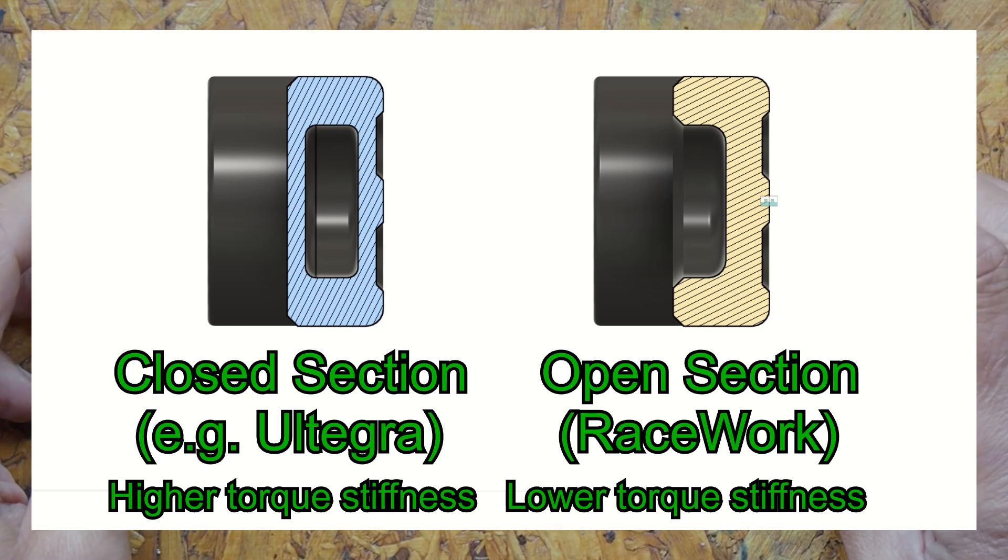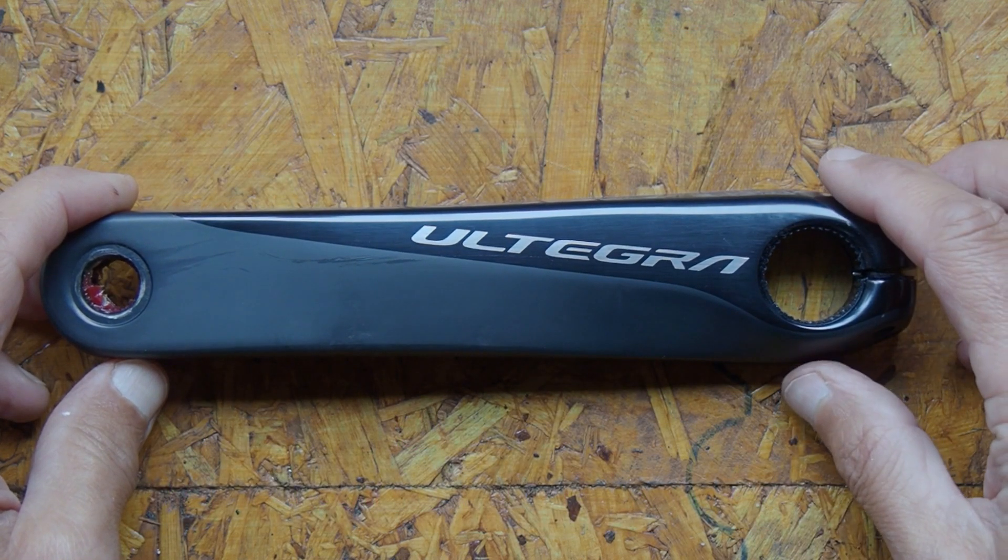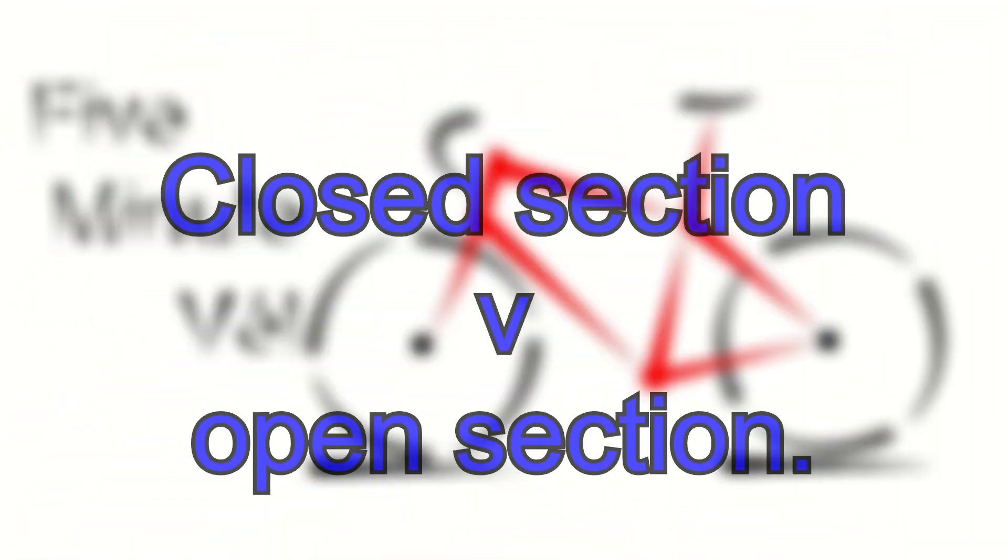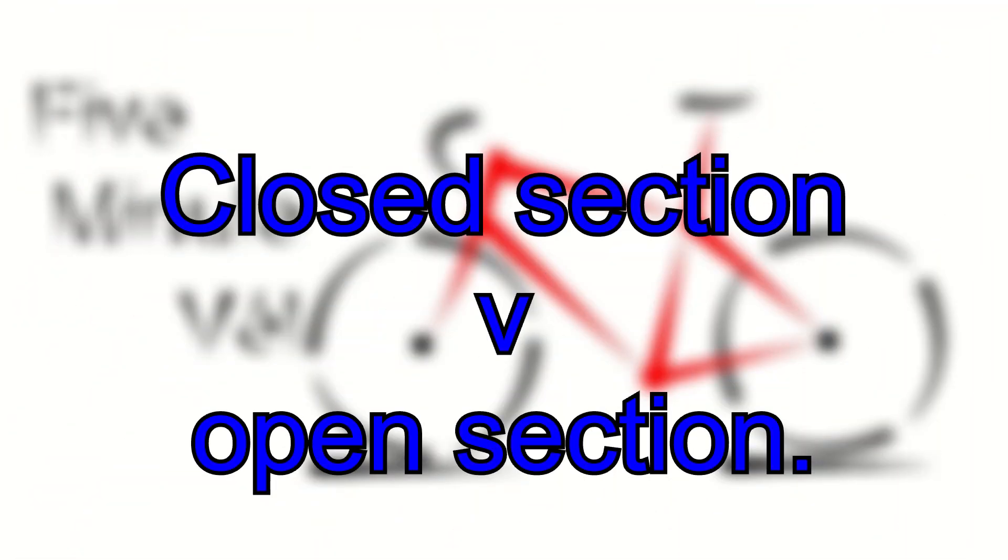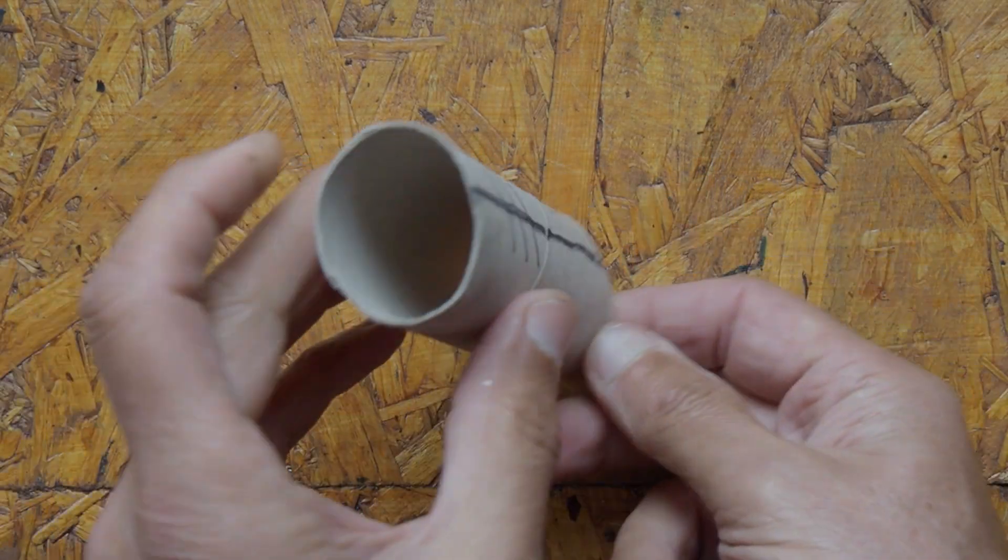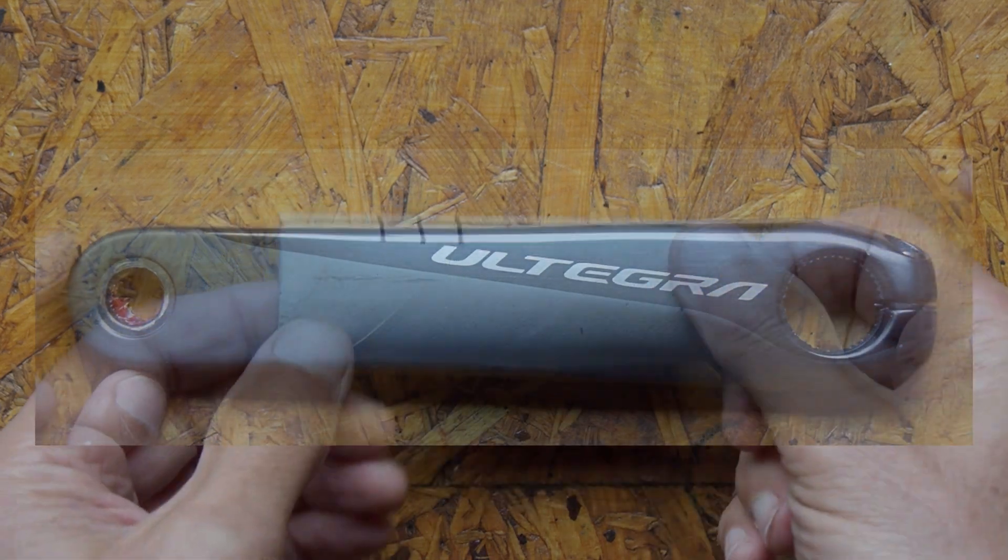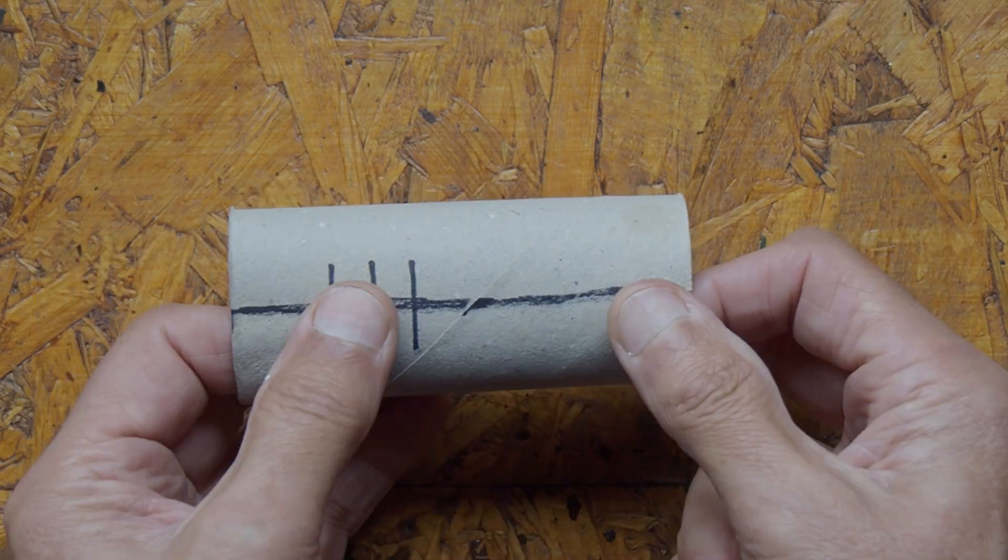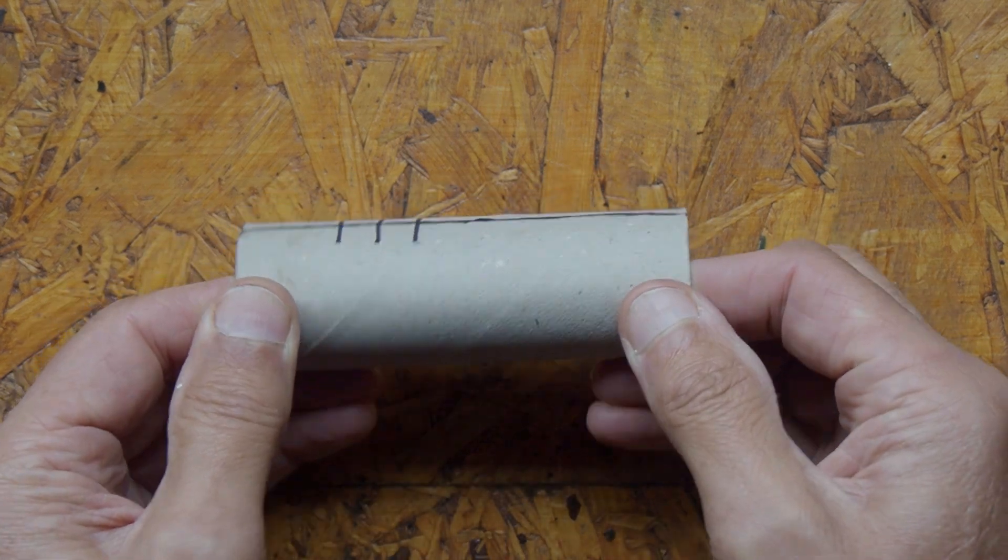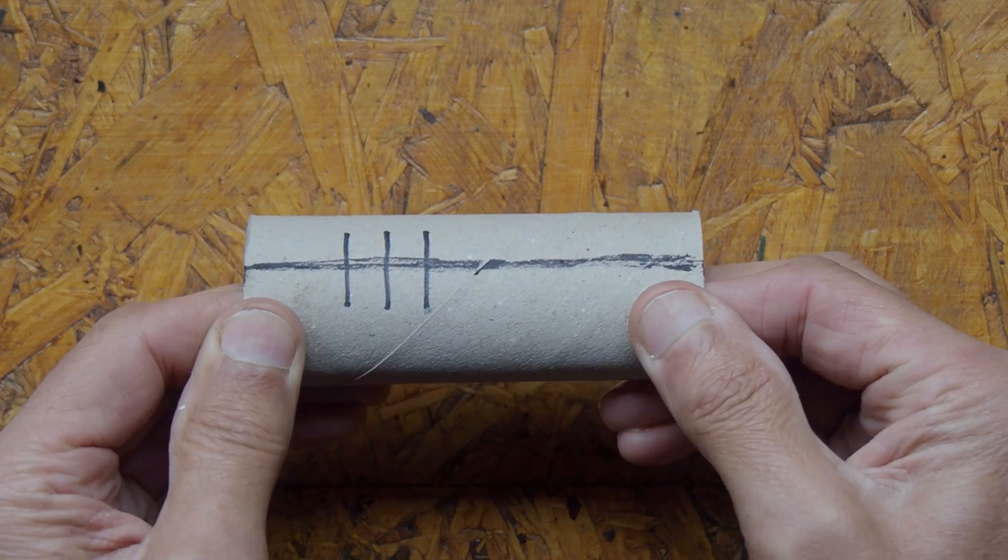Closed section designs like on this Ultegra crank set are more efficient at producing rotationally or torque stiffened components, and I'll demonstrate that with the toilet roll tube. The cardboard tube is closed section and therefore represents something like this Ultegra crank set. I've put some marks on the tube so you can more easily see what happens. If I apply a torque to the tube it feels relatively stiff, and note those three lines stay in line.